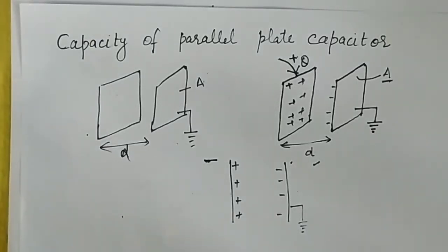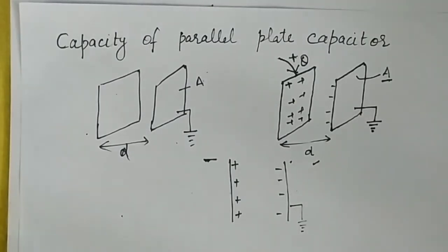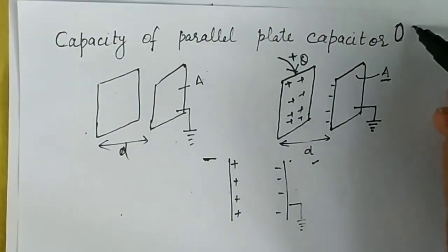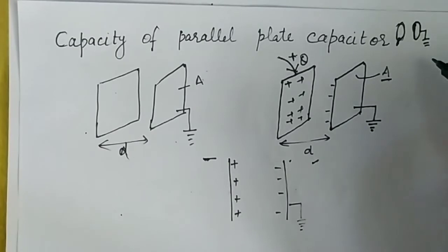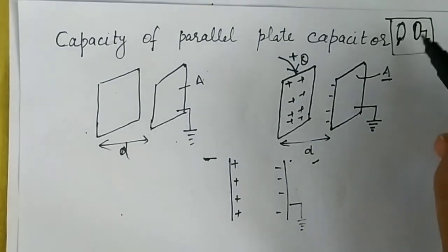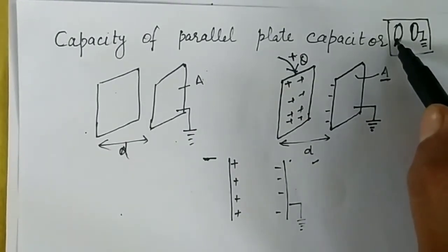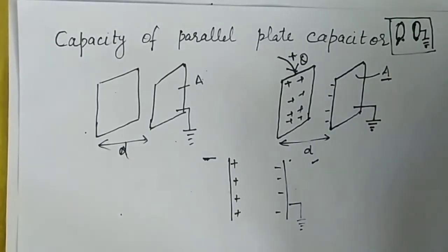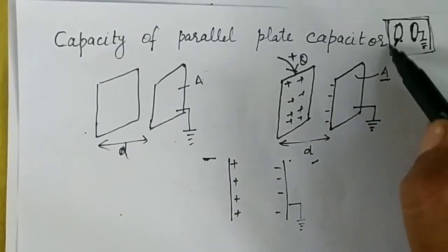In this video we will discuss the capacity of a parallel plate capacitor. A capacitor is basically an arrangement to increase the capacity of a conductor by placing another conductor nearby which is earthed. This arrangement is known as a capacitor — adding another earthed conductor in front of the first one increases its capacity.